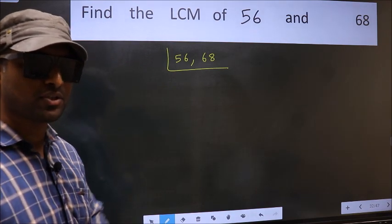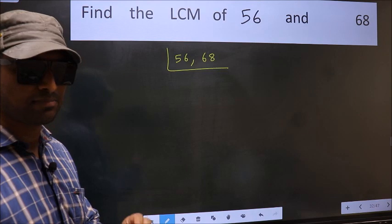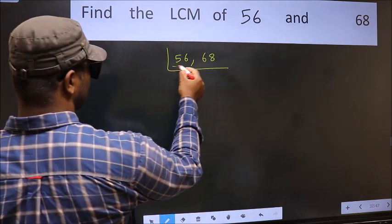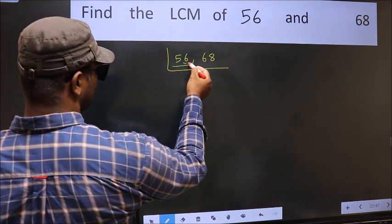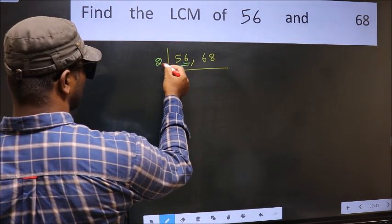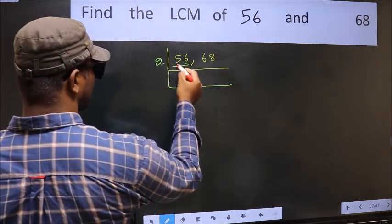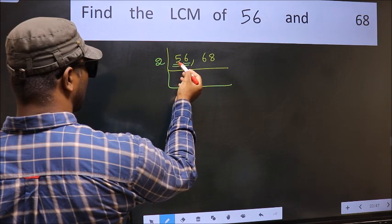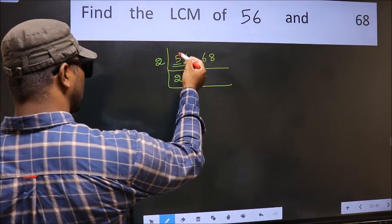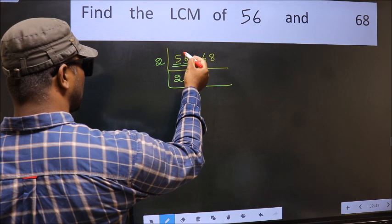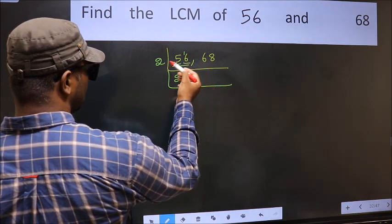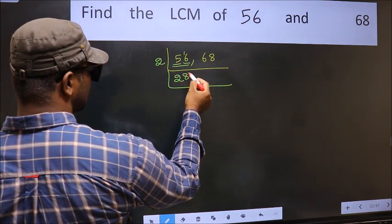Now focus on the first number, which is 56. The last digit is 6 — even, so take 2. First digit is 5; a number close to 5 in the 2 times table is 2×2=4. 5−4=1, carried forward gives 16. We get 16 in the 2 table as 2×8=16.